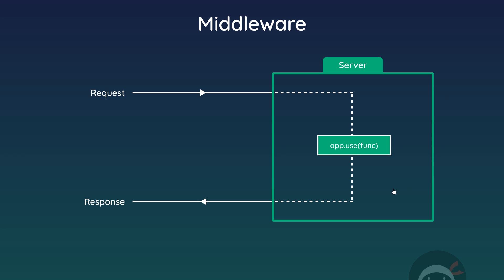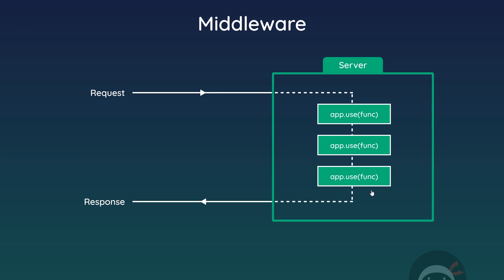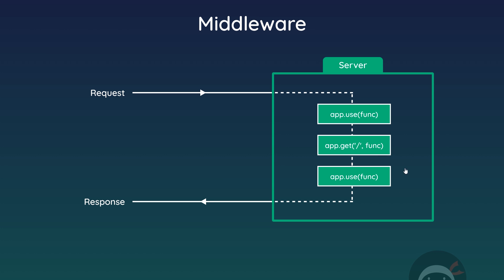We don't just have to have one bit of middleware — we could have more than one piece of middleware that runs on the server. In this case, three functions would run on the server before a response is sent. The functions that run in our get handlers are also essentially middleware. The difference being that get handlers only fire for get requests to a certain route, while the use method runs for every type of request to all routes, including post requests.